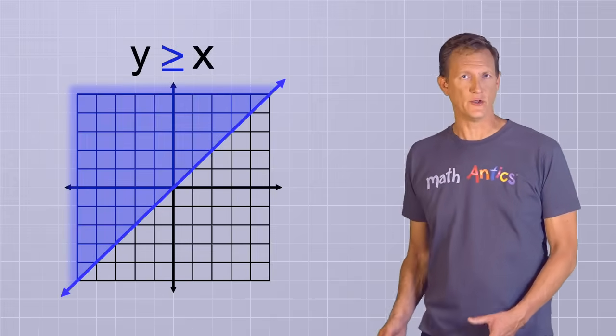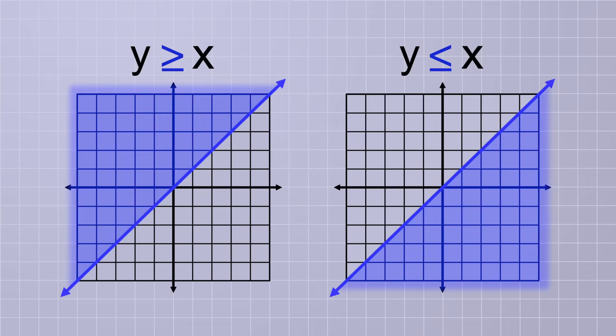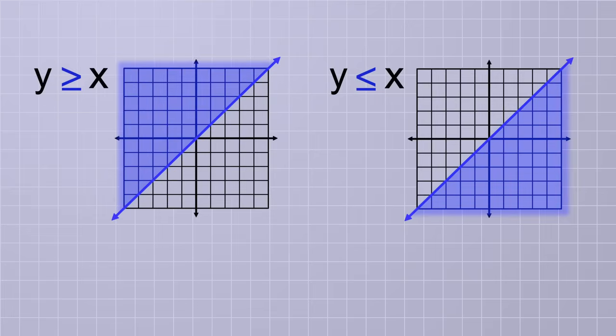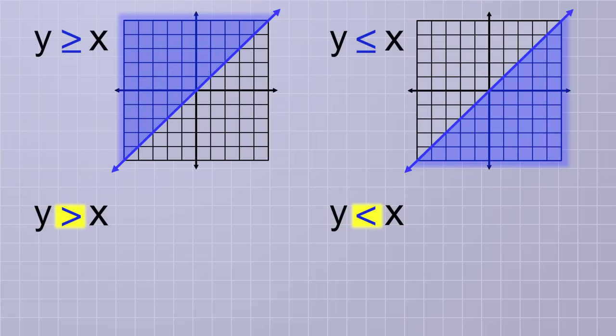Getting back to our digital graph, as you might expect, if our inequality had used the less than or equal to sign instead, then all of the solutions would be on or below the diagonal line, like this. Because both of these inequalities include the equal sign, any point occurring directly on the y equals x line is included in the set of valid answers. In fact, you can think of these inequalities like combinations of the equation y equals x and the inequalities y is greater than x and y is less than x.